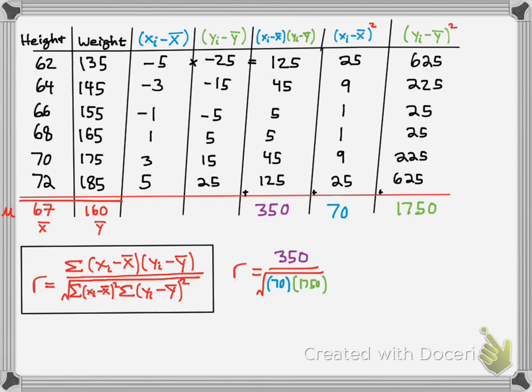Now you simply plug that into the formula there. So the sum of the product, which is on the top, is what we found to be 350. And then the squared sum of just the x component is 70, and the squared sum of the y component is 1750. You plug those in, take the square root, and you get your r to be 1.